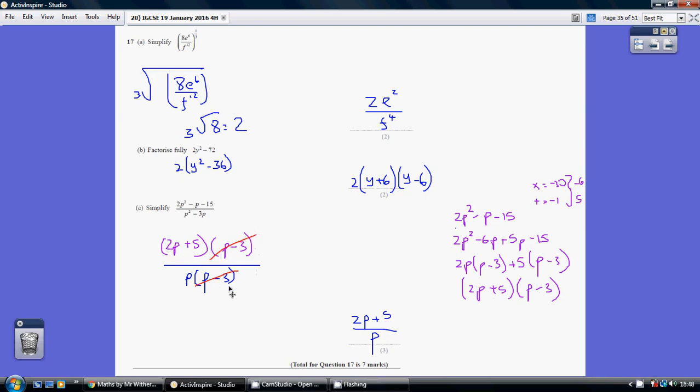And then you can see we've got a common factor here, the p minus 3, cancel, leaving us with 2p plus 5 all over p. And at that point you can just drop the bracket because it's not being multiplied by anything.